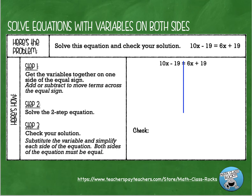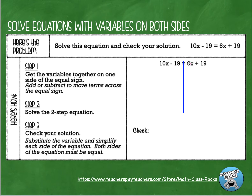Here's the problem. Solve this equation and check your solution: 10x minus 19 equals 6x plus 19. Let's notice that we have a variable on the left side of the equation and the right side of the equation — that's something new. Normally our variables are only on one side or the other, which is why this is called solving equations with variables on both sides — both sides of the equal sign.